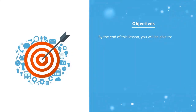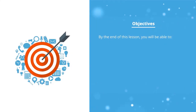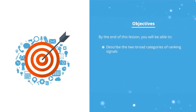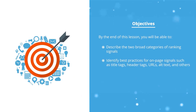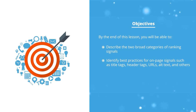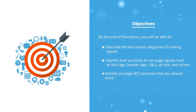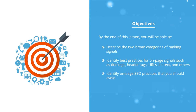At the end of this lesson, you will be able to describe the two broad categories of ranking signals, recite best practices for on-page signals such as title tags, header tags, URLs, alt text, and others, and identify on-page SEO practices that you should avoid.